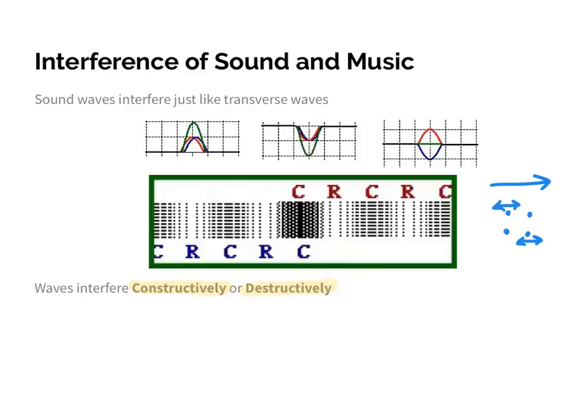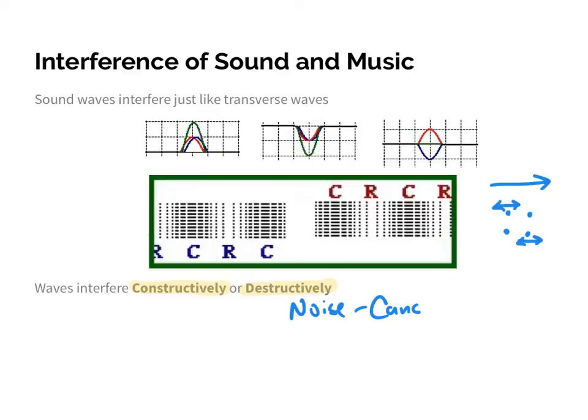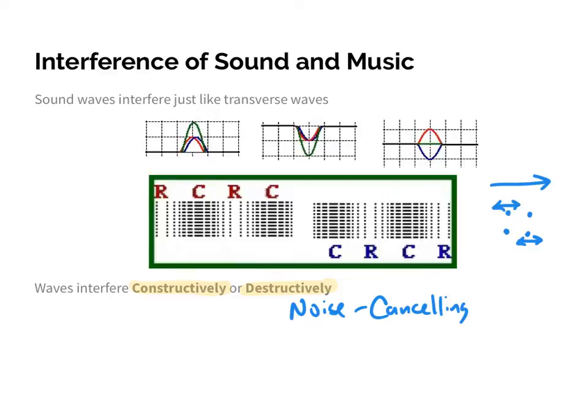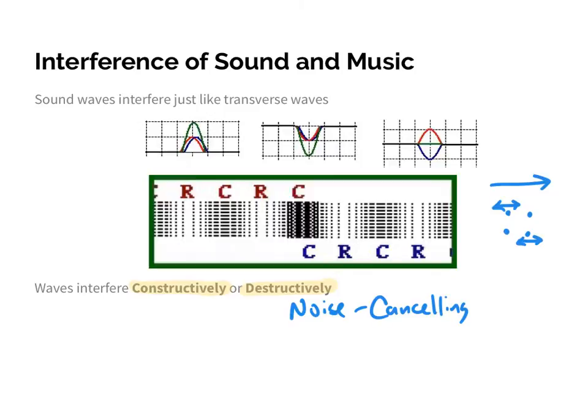Destructive interference is hard to simulate in a video lesson, but it can occur — it's when sound waves completely cancel each other out. An application of destructive interference would be noise-canceling headphones. What those headphones do is generate a sound wave that eliminates some of the noise heard outside, using a sound wave to destruct any noise outside while not affecting anything inside the headphone. Sound waves act just like transverse waves in that they can interfere constructively or destructively.